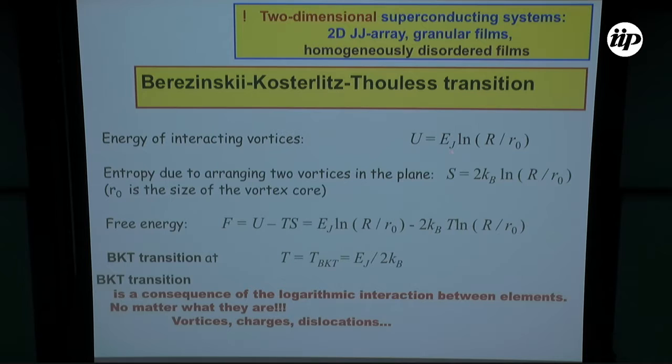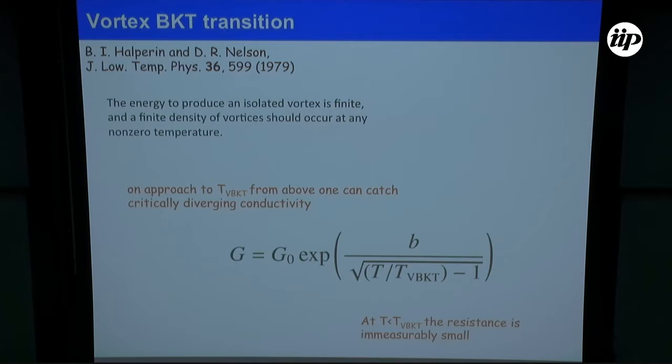I just would like to show you how this transition looks from one specific experiment. Really, this transition can be checked in many experiments: from the linear resistance, nonlinear resistance, magnetization, a lot of things. But here today I will concentrate only on the resistive measurements and how to determine T_BKT from the linear measurements.